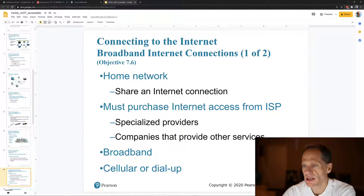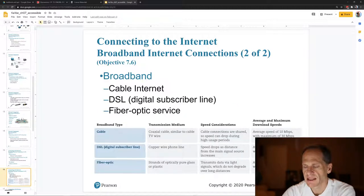A home network, you can share the internet connection. You've got to purchase internet access from an internet service provider. And it's often called broadband. And you could also do cellular connection. And so broadband could be cable internet, digital subscriber line, DSL, or fiber optic, which is the fastest and the best.